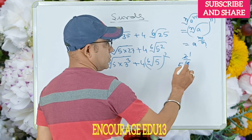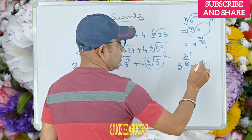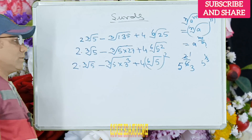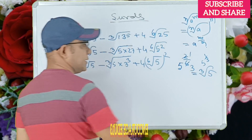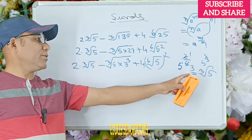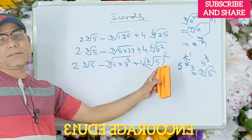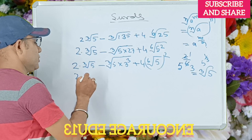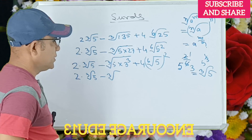So 2 by 6 simplifies to 1 by 3, giving us the cube root of 5. So 2 times cube root of 5 minus 3 times cube root of 5, similarly written on the line. I will write 2 times cube root of 5 minus 3 times cube root of 5.